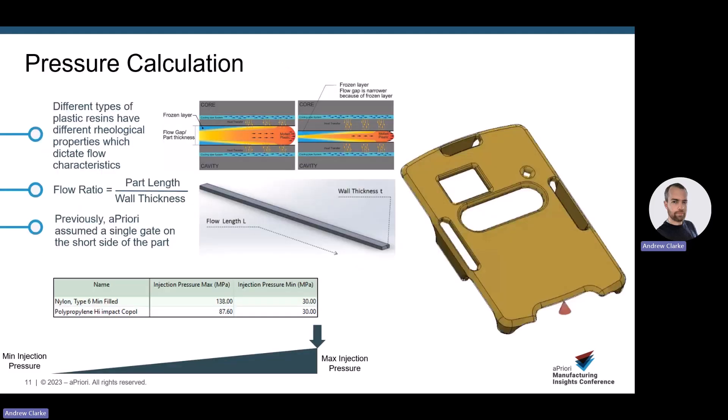While investigating this issue, we reviewed the way in which we calculate pressure. Firstly, we understand that different types of plastic resins have different rheological properties which dictate flow characteristics. Our clamp force calculation uses a material's minimum and maximum pressure from the material library, and will select a point in this range based on a number of parameters, the most significant being flow ratio. We assume a single gate on the short side of the part, conservatively giving the longest flow length. The flow ratio calculation is the part length divided by the nominal wall thickness. For a smaller part like this, the resultant data aligns well with reported production parameters.